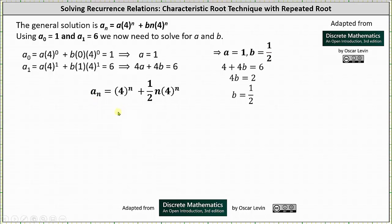It's important to remember that when we have a repeated solution or a single solution to the characteristic equation, the second term of the general solution will have a factor of n, which is not present when we have two distinct solutions. I hope you found this helpful.